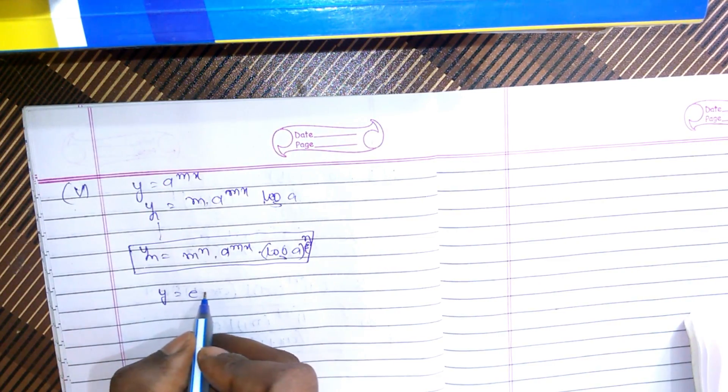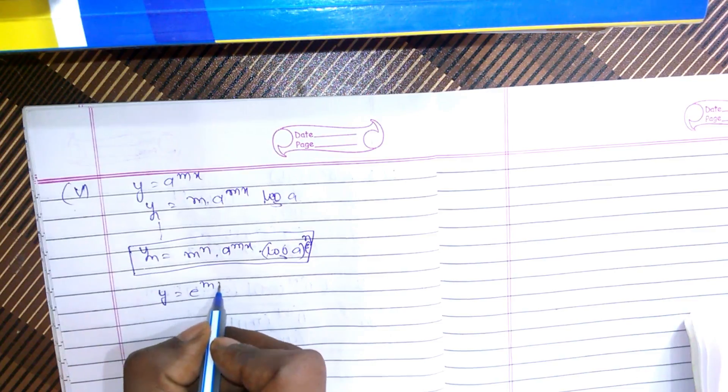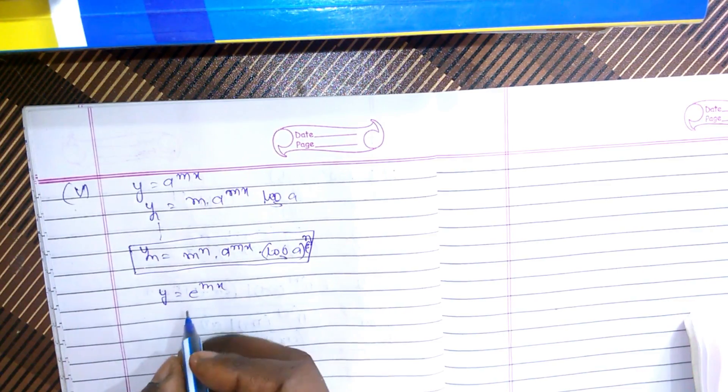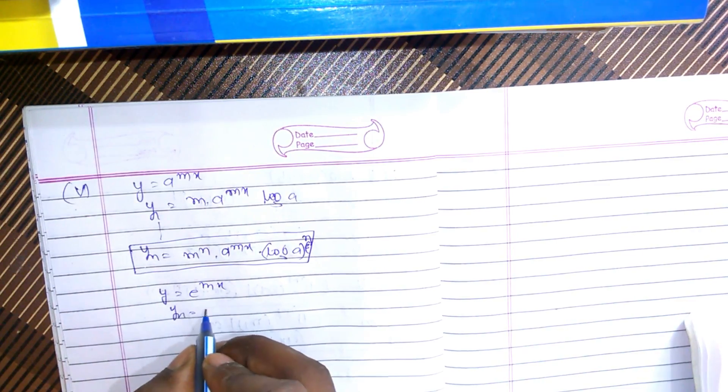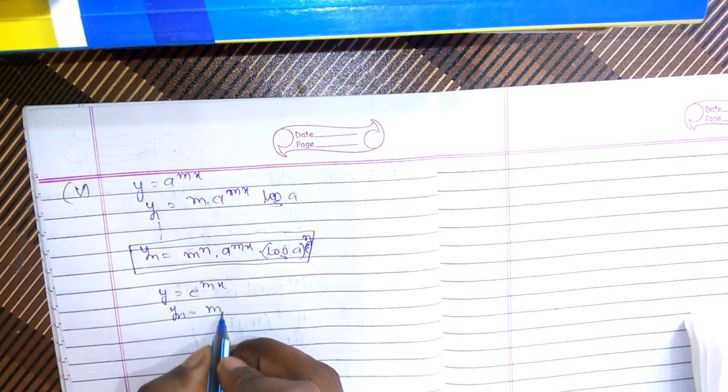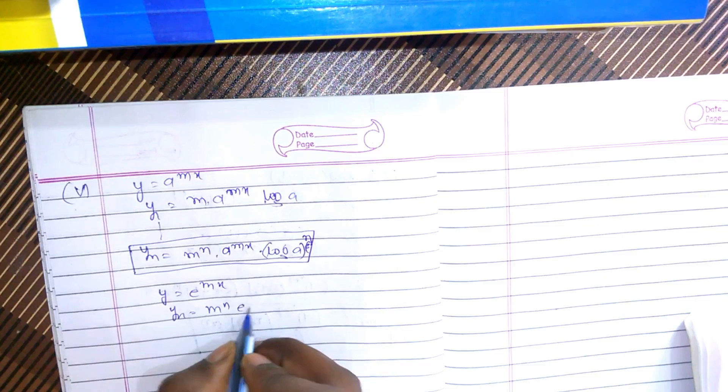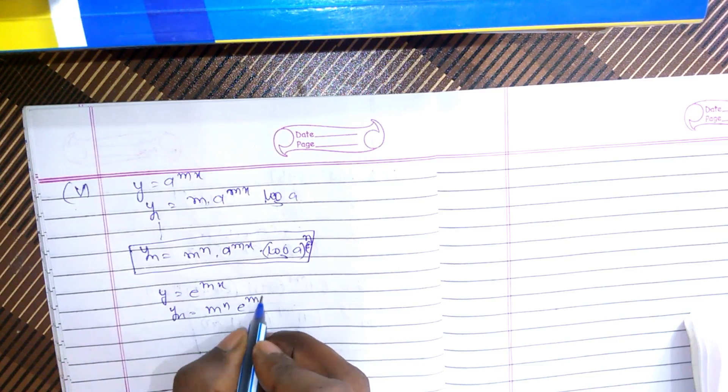Similarly, for y equals e^(mx), we obtain yn equals m^n · e^(mx).